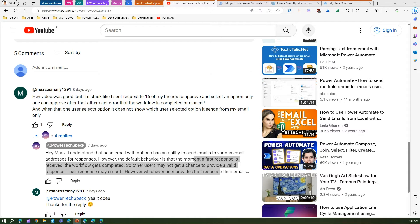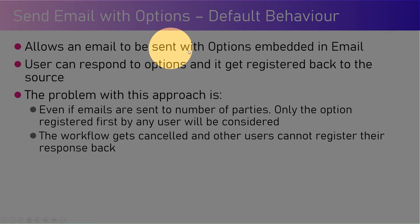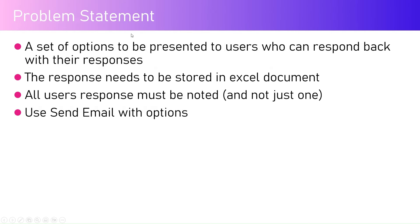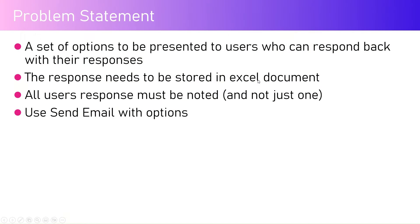Let me share my screen. The Send Email with Options default behavior allows an email to be sent with options embedded; the user can respond and it gets registered back to the source. The problem with this approach is that even if emails are sent to multiple parties, only the option registered first by any user will be considered — the workflow gets cancelled and other users cannot register their response. The goal is: a set of options should be presented to multiple users (15, 20, or more), their responses stored in an Excel document, with all users' responses noted — not just one.